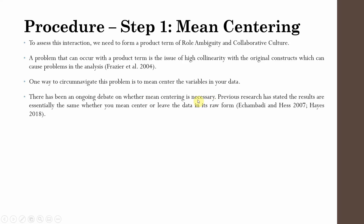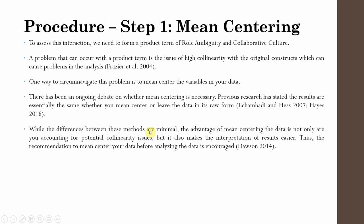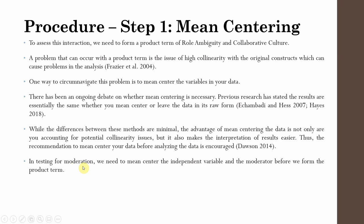There has been a long debate on whether mean centering is necessary. Previous research has stated that the results are essentially the same whether you mean center or leave the data in its raw form. However, the advantage of mean centering is that it accounts for potential collinearity issues and makes interpretation of results much easier. In testing for moderation, we need to mean center the independent variable and the moderator before forming the product term.